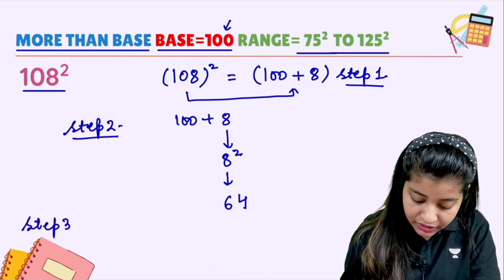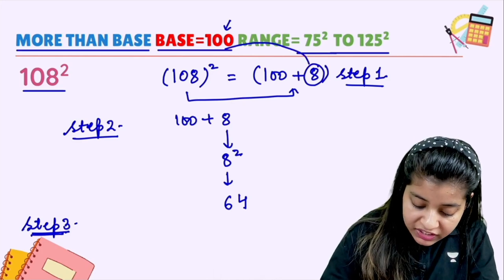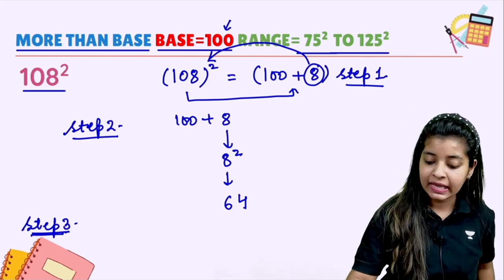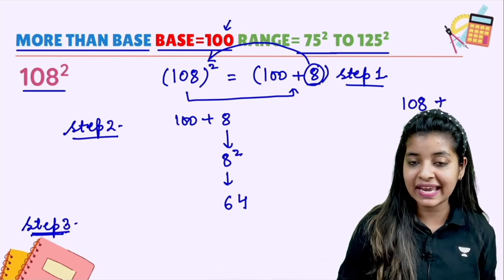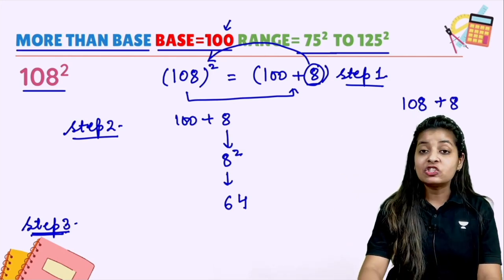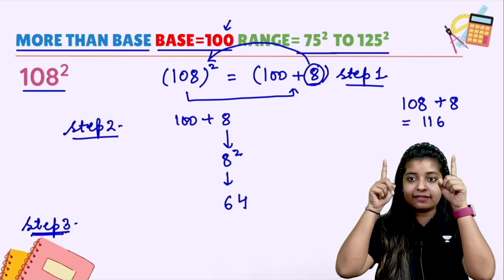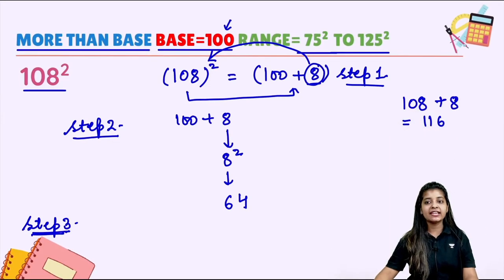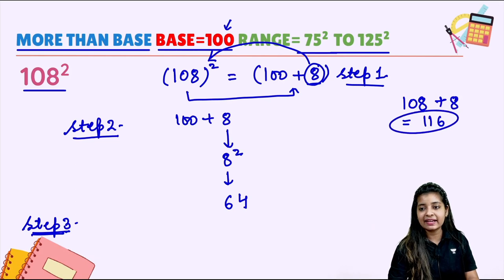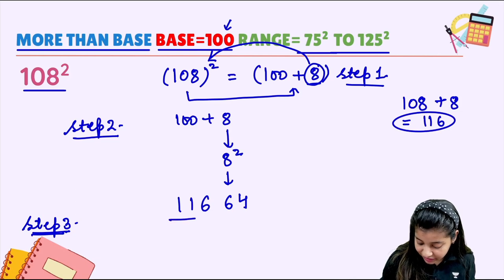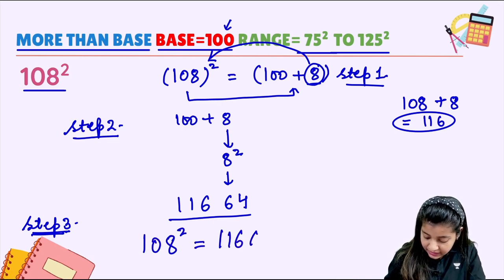Step 3 — last and final step. Step 3 says: take this number 8 and go back to the actual question number 108 and add it there. So 108 plus 8 gives you 116. Take 116 and write it before 64. And this is your final answer. So we can say 108 squared is equal to 11664.